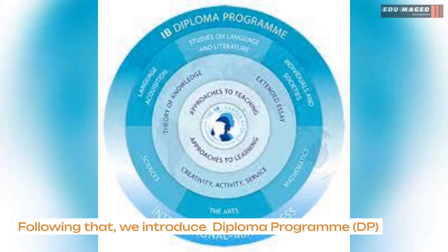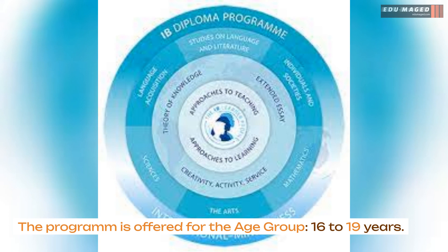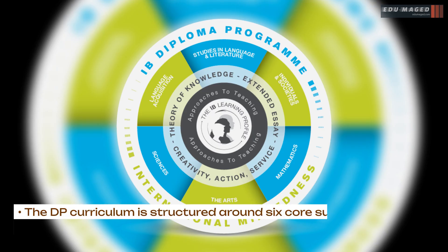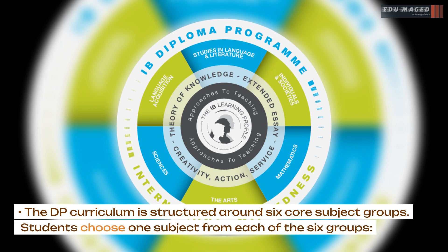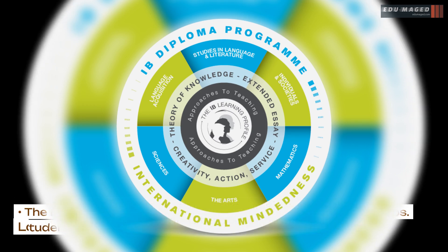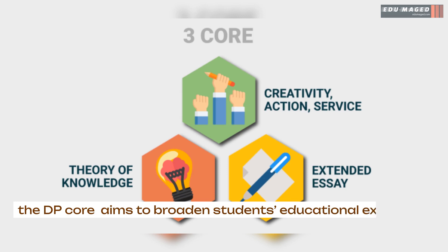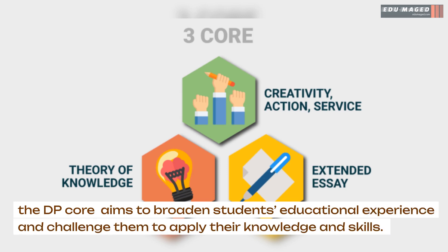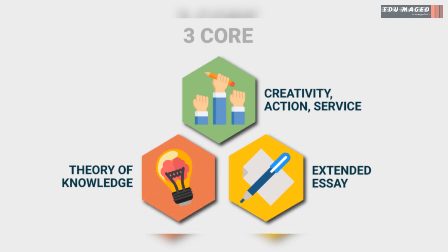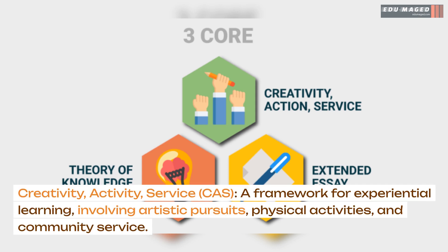The Diploma Programme, DP, is offered for ages 16 to 19 years. The DP curriculum is structured around six core subject groups, with students choosing one subject from each: studies in language and literature, language acquisition, individuals and societies, sciences, mathematics, and the arts. Students may also opt for a second subject from groups one to five instead. The three DP core elements are: the Extended Essay, a 4,000-word independent research essay on a topic of the student's choice; Theory of Knowledge, or TOK, a course that challenges students to reflect on the nature of knowledge; and Creativity, Activity, Service, or CAS, a framework for experiential learning involving artistic pursuits, physical activities, and community service.